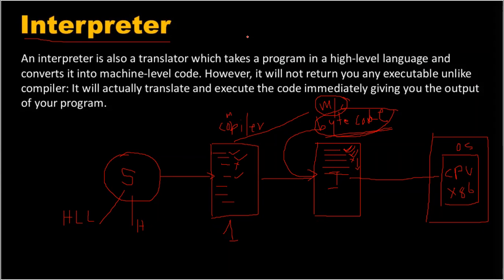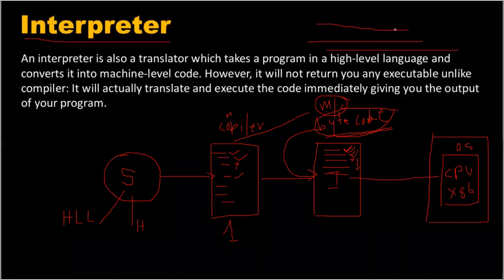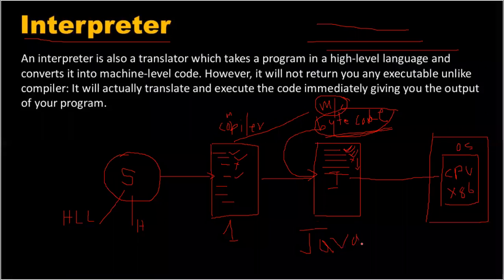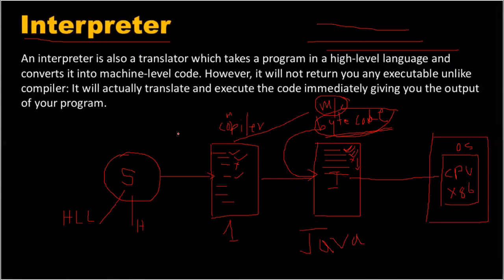The interpreter is also a software. It always checks bytecode line by line. If any line has a problem, it will not compile further lines. This is one drawback — because of this line-by-line verification, Java is a little bit slower compared to C.